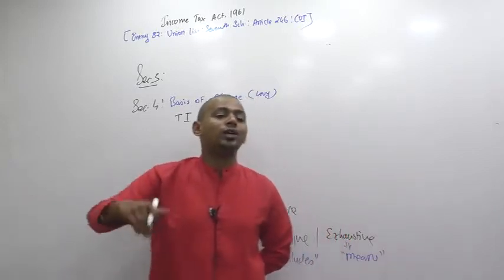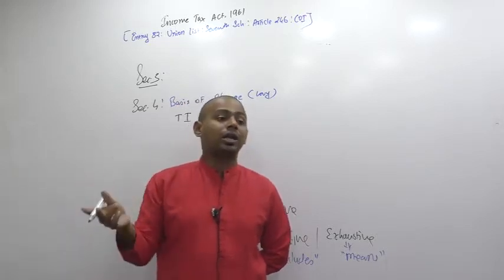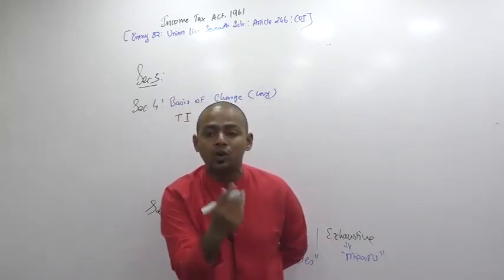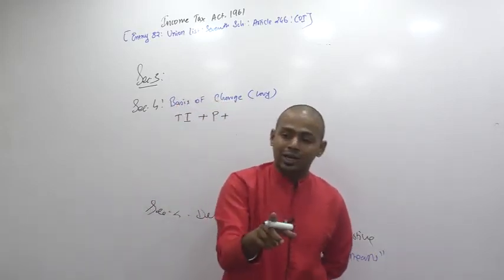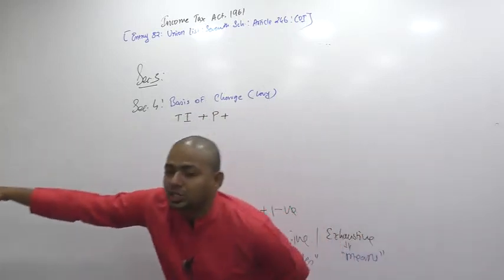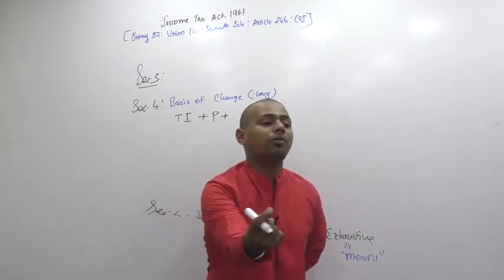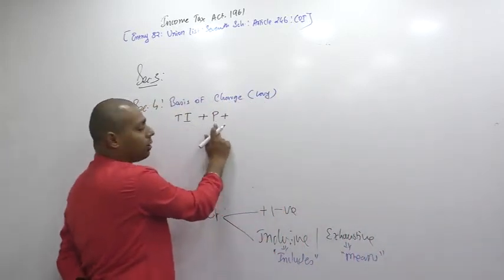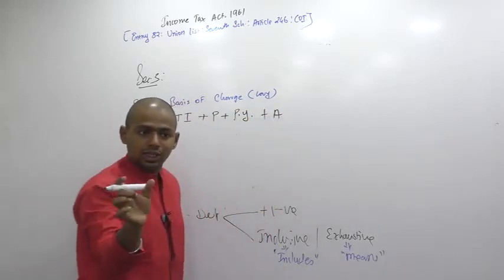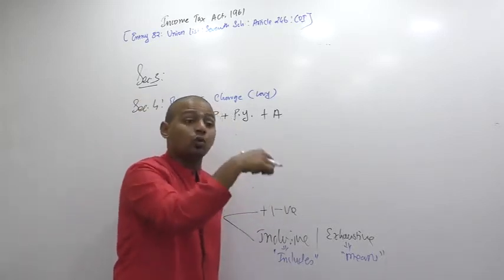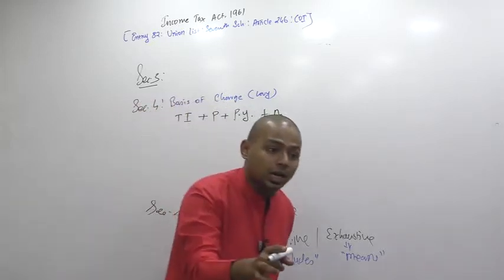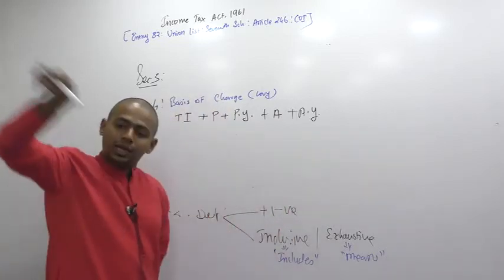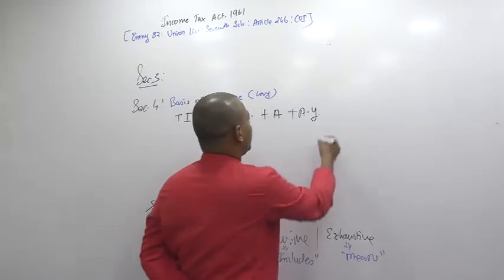Previous year means last financial year. Right now, financial year 18-19 is going on. But when you write your exam — say June 19 — that falls in financial year 19-20, which is your assessment year. The financial year just concluded is 18-19, which is your previous year. So previous year 18-19, and assessment is done in assessment year 19-20. Total income earned by a person in a previous year shall be assessed in the assessment year at applicable tax rates.